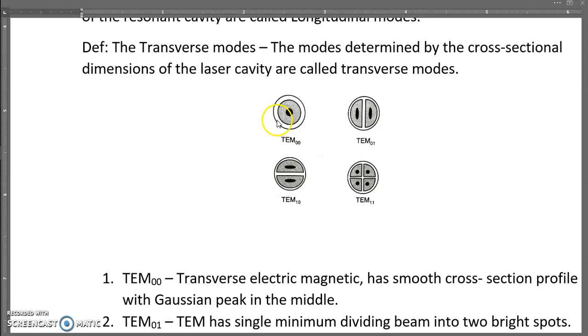This transverse electric magnetic mode has a smooth cross-section profile with a gaussian peak - this dark one is the gaussian peak in the middle. Now this is the second example, TEM01.